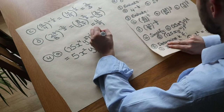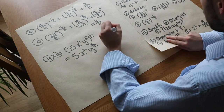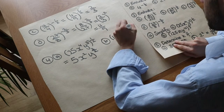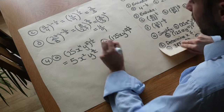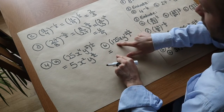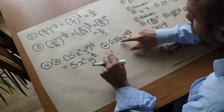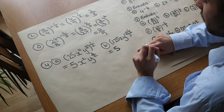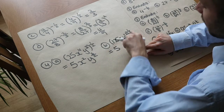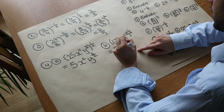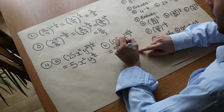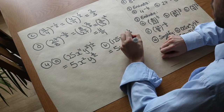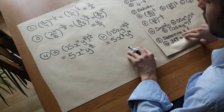For (125xy¹²) to the power of a third: we raise each factor to a third. 125 to the third is the cube root of 125, which is 5, since 5 cubed is 125. Then x to the power of a third is just x^(1/3). For y¹² to the third, we multiply powers: 12 times a third is 4, giving y⁴. So the expression simplifies to 5x^(1/3)y⁴.